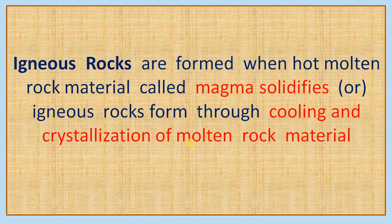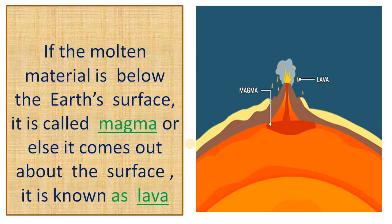What are igneous rocks? Igneous rocks are formed when hot molten material called magma solidifies. Otherwise, igneous rocks form through the cooling and crystallization of molten rock material. If the molten material is solidified below the earth's surface, then it is called magma; otherwise, if it comes out and solidifies above the surface of the earth, it is known as lava.